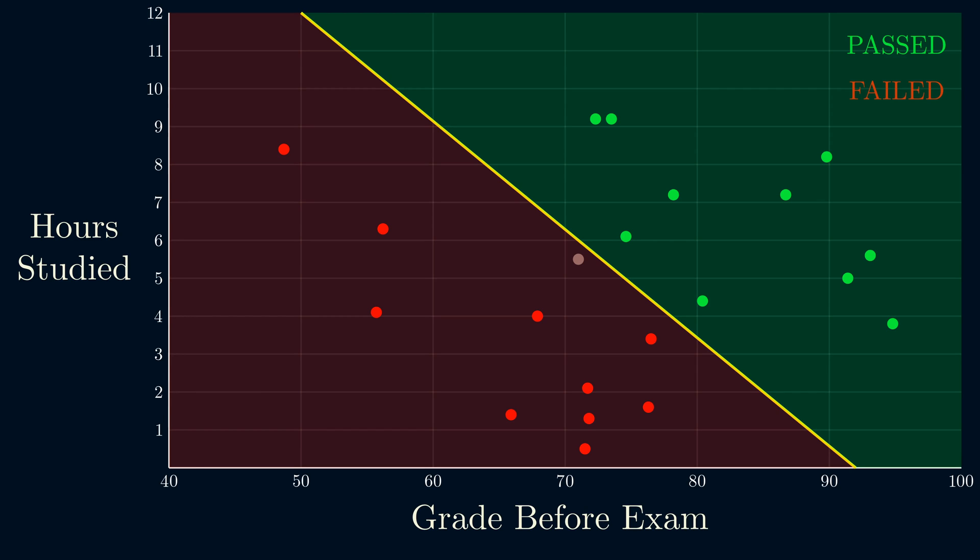For this specific line, our mystery student falls in the red area, so we predict that he'll fail. But there are other lines possible, and in some of them, we might predict he'll actually pass.